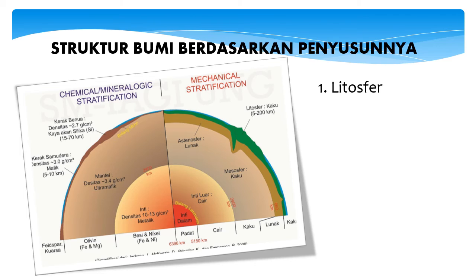Lapisan yang kedua adalah astenosfer. Astenosfer terletak kira-kira 100-350 km di bawah litosfer. Lempeng-lempeng litosfer yang kaku bergerak di atas astenosfer yang lebih cair karena suhu astenosfer hampir sama dengan titik leburnya, sehingga astenosfer bersifat seperti fluida. Arus konveksi memindahkan panas melalui zat cair atau gas, sehingga lempeng-lempeng dapat bergerak dan menimbulkan getaran di atas permukaan bumi. Astenosfer mengalir akibat tekanan yang terjadi di dalamnya.